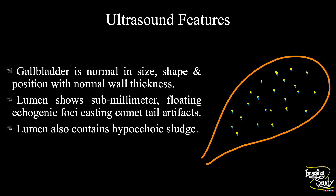So in summary, the gallbladder is normal in size, shape, and position with normal wall thickness. The lumen shows sub-millimeter floating echogenic foci casting comet tail artifacts, indicating cholesterol floaters. Hypoechoic sludge is also seen within the lumen.